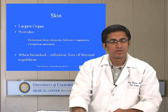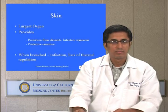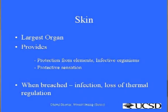Skin is the largest organ on the body. It provides protection from the elements and infectious organisms, and also provides protective sensation. When it's breached, there can be infection and loss of thermal regulation. In large burn patients with a large surface area of skin affected, patients can become hypothermic very easily.